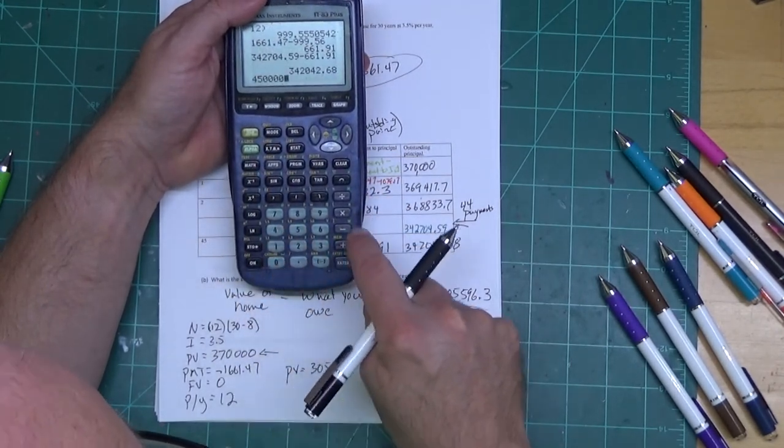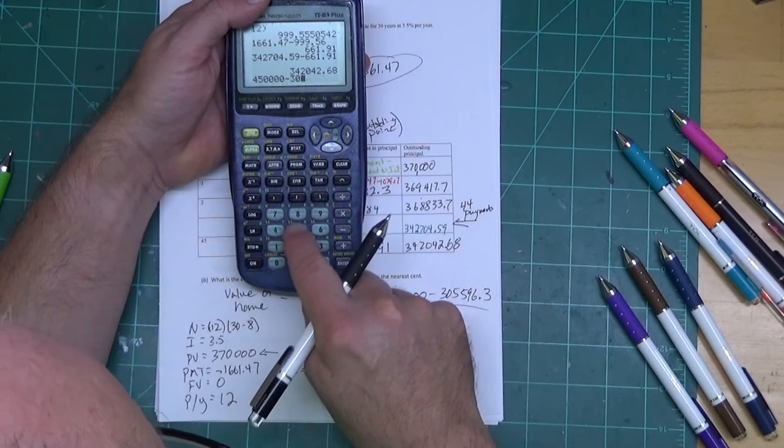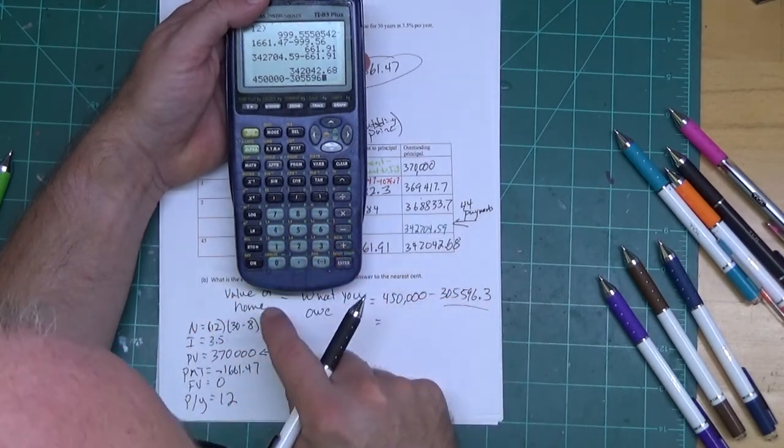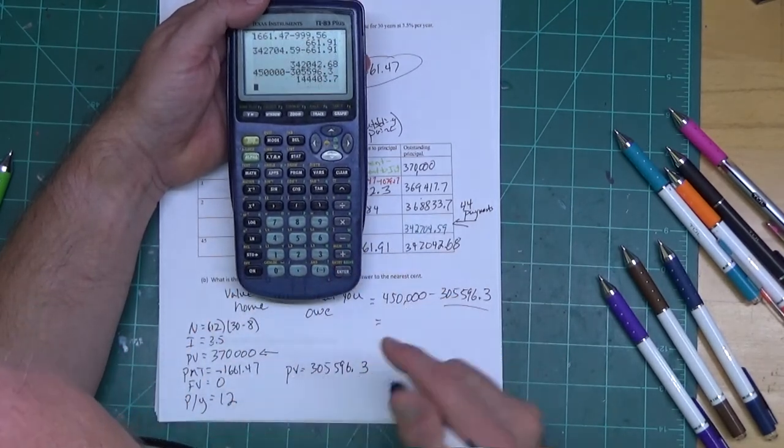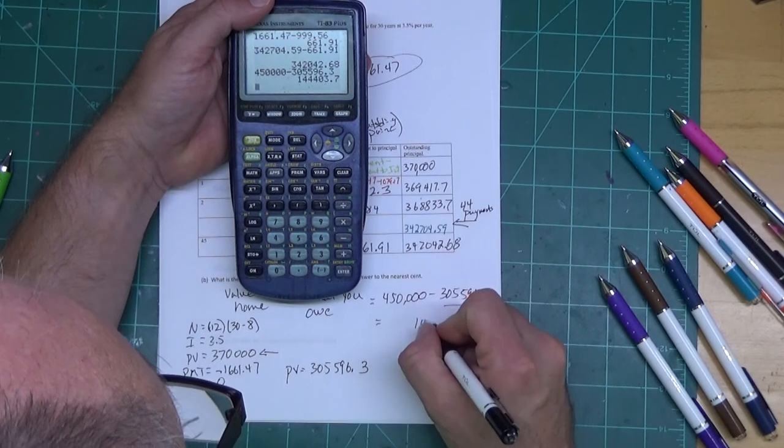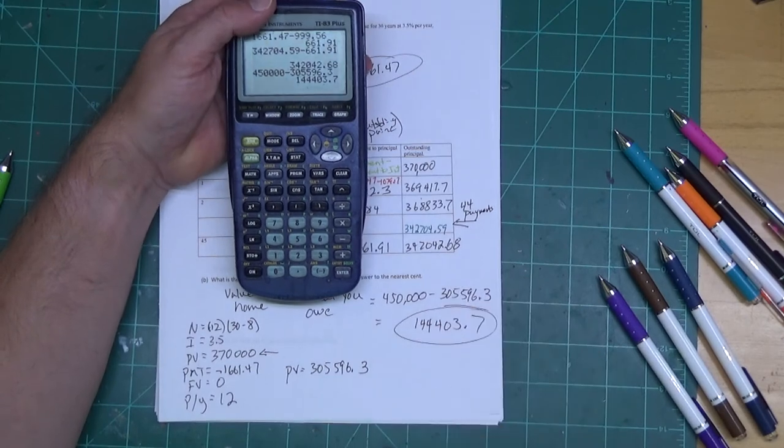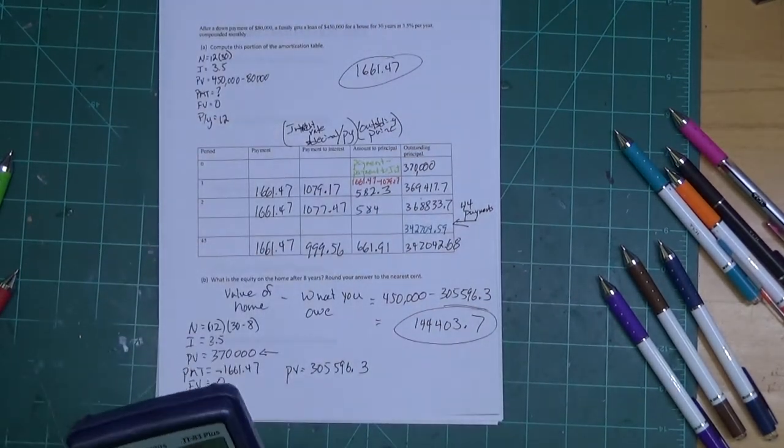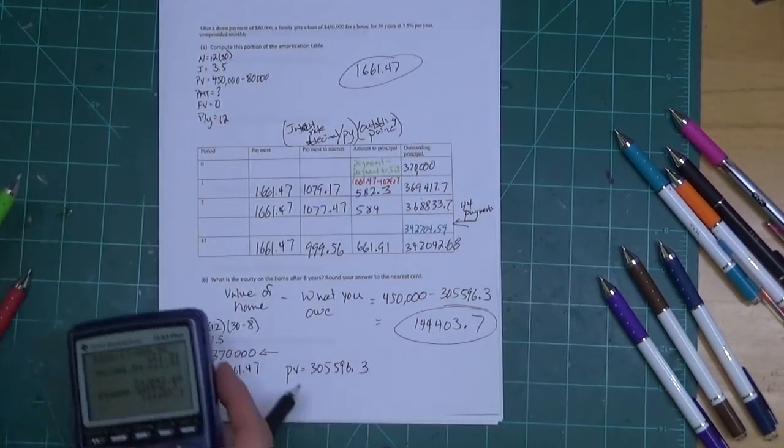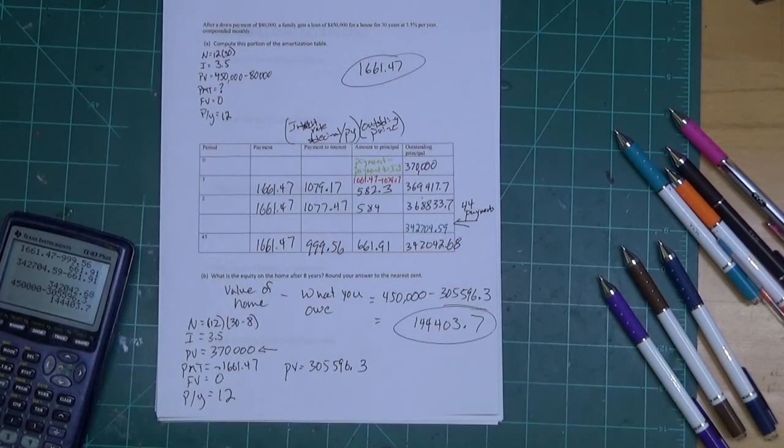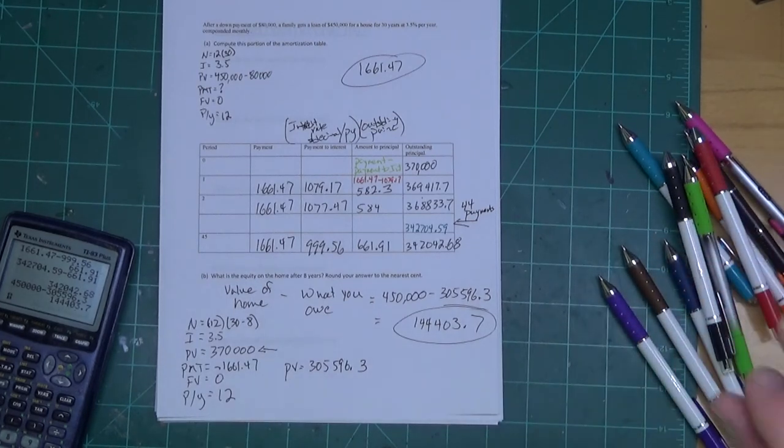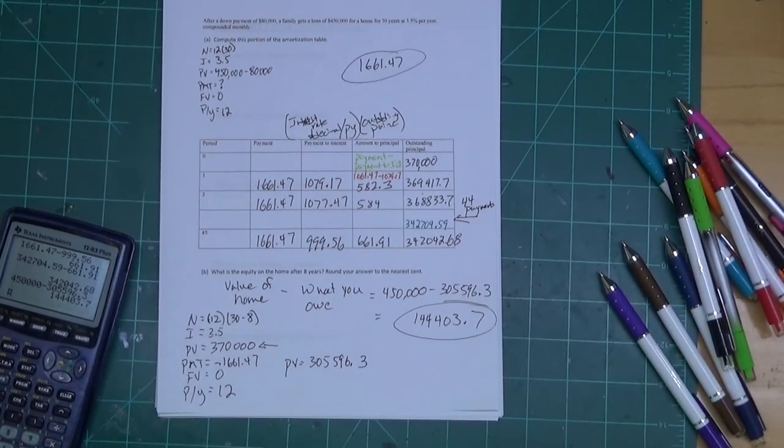And it comes out to be 305,596.3. So I'm putting 305,596.3. And when I do 450,000 minus 305,596.3, we get our equity: 144,403.7. And there's my equity. Hopefully you find this helpful and useful on your final. I know there's going to be a problem like both of those on a test, so it shouldn't hurt to have them. And I'll go get this posted to YouTube right away. Talk to you all later.